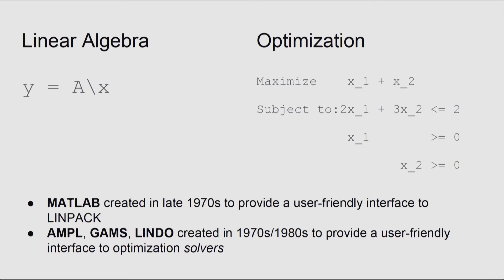For optimization, it's a very similar idea. If you want to write down an optimization problem in mathematical syntax, what a modeling language does is take this mathematical syntax and translate it into a form that existing algorithms know how to consume. If you have a linear optimization problem, you can encode all of your problem data in a matrix. The modeling language turns your problem into a matrix, sends it off to an existing algorithm, and gives you the answer back. It's a simple but very important idea — if you can write down your problem in this form, it's much better than generating a matrix manually.